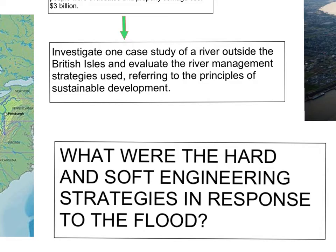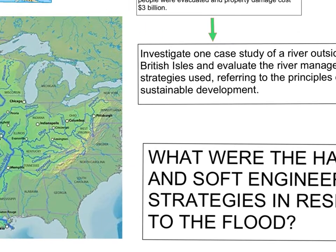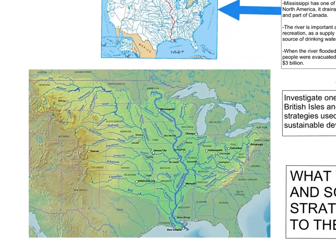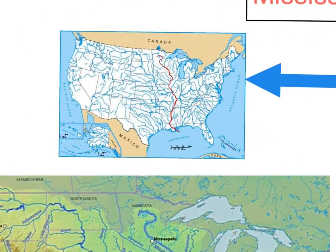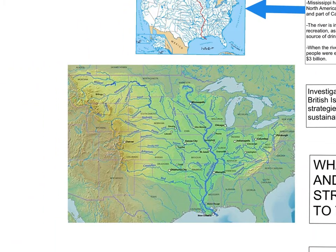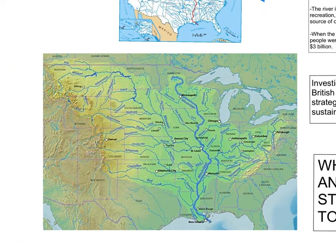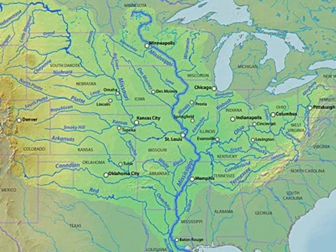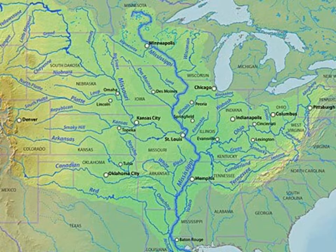Just to introduce our location, you can see here the Mississippi in the context of North America. The Mississippi is obviously a huge river and it flows through 10 states. Its drainage basin covers one third of the country. You can see in this picture the massive amount of tributaries, for example the Ohio and the Missouri, which are massive rivers in their own right.